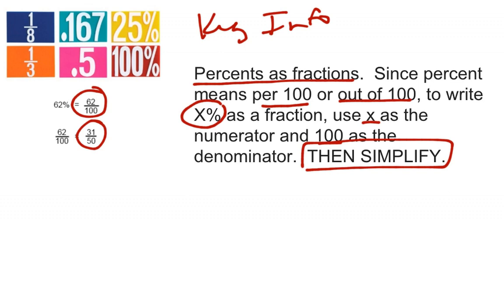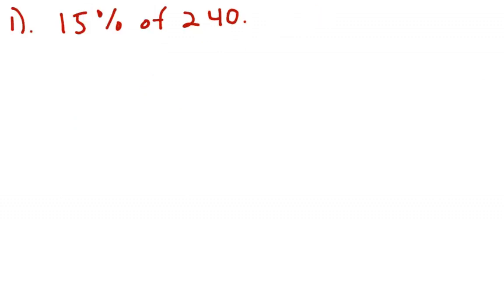So here are some example problems. So example one, we want to find 15% of 240. There was a problem in the book that talks about some seedlings and replanting some, and they want to replant 15% of the seedlings. They have 240 of them, so 15% of 240. The first step, if we look back,